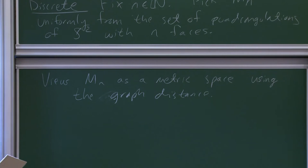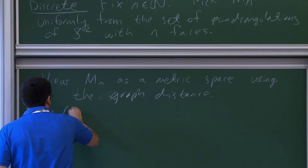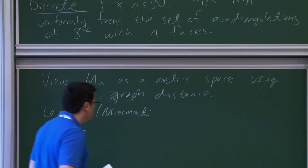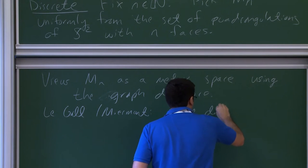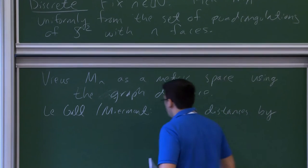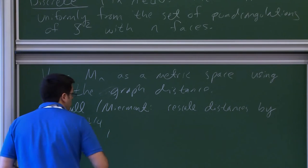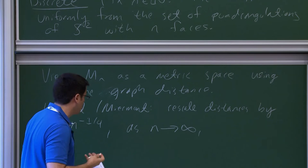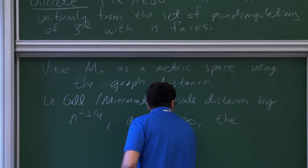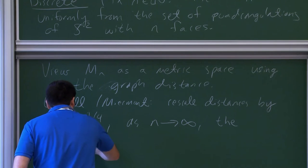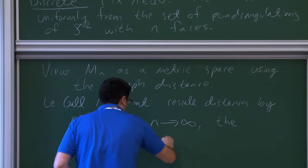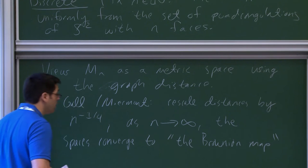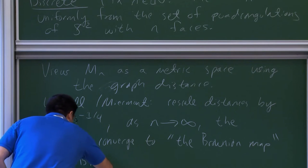Now we have a random metric space. It was shown by Le Gall and Miermont independently that if you take this random metric space and rescale distances by the factor n to the minus one quarter, then in the limit these random metric spaces converge. The spaces converge to an object called the Brownian map, which I'll abbreviate as TBM.